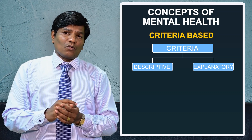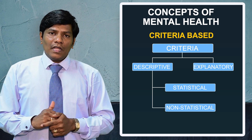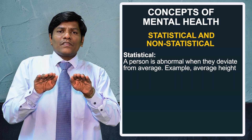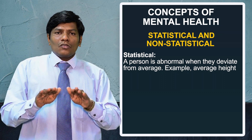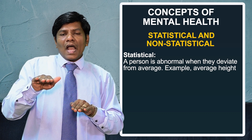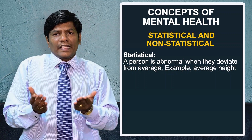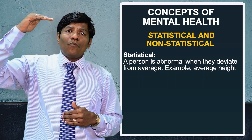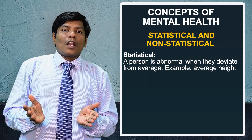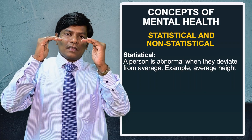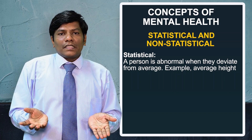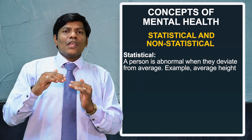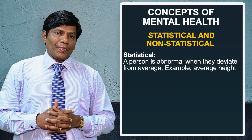Under descriptive criteria, there are two types: statistical and non-statistical. Statistical criteria deals with averages — any individual who deviates from the average is considered abnormal. For example, in India, if the average height is around six feet, anyone with a height of eight feet or three feet would be considered abnormal. Similarly, any behavior deviating from the statistical norm can indicate mental illness.